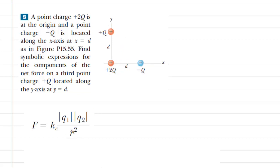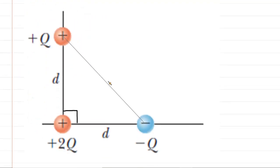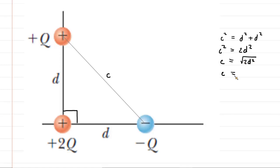In order to use Coulomb's Law successfully, we need to find the distance between the two charges. The distance between the positive charges is obvious — it's symbolized by d. Less obvious is the distance between the positive and negative charge. We've drawn a line connecting those two charges, forming a right triangle. We label the hypotenuse C, and using the Pythagorean theorem: C² = d² + d² = 2d². Taking the square root gives C = d√2.